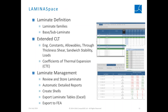Laminate Space is the module dedicated to extended classical laminate theory. It allows you to define laminate families including base and sub-laminates — you can start from a base laminate and create an infinite number of sub-laminates across your product. The tool allows you to review engineering constants, through-thickness shear, sandwich stability, load calculations, and recently added coefficients of thermal expansion. You can export laminate tables to Excel or export laminates to FEA.